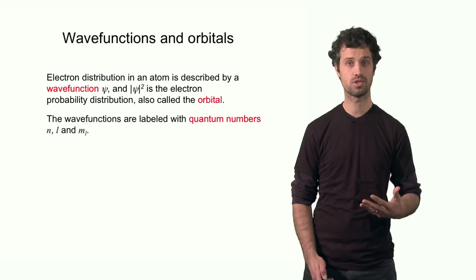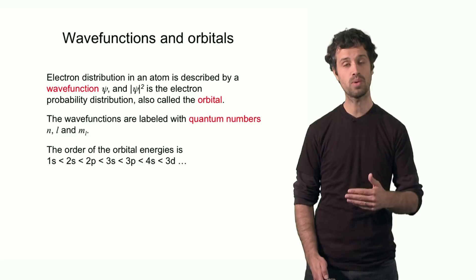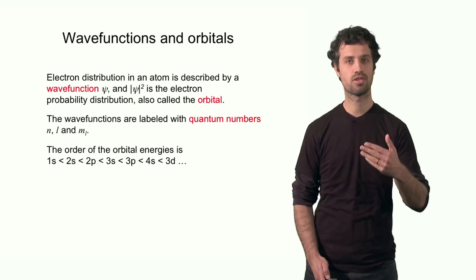The orbitals have specific energies. The lowest energy orbital is the 1s, followed by the 2s, then the 2p, the 3s, the 3p, then the 4s, the 3d, and so on.